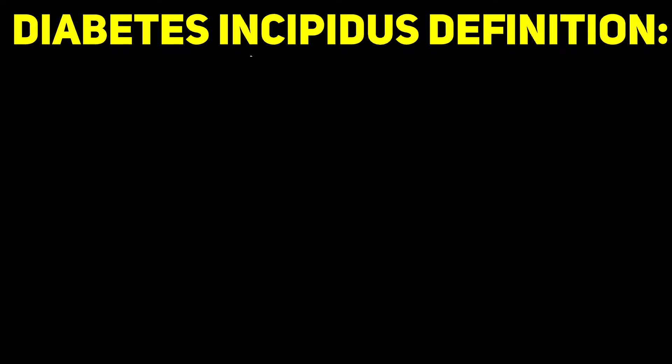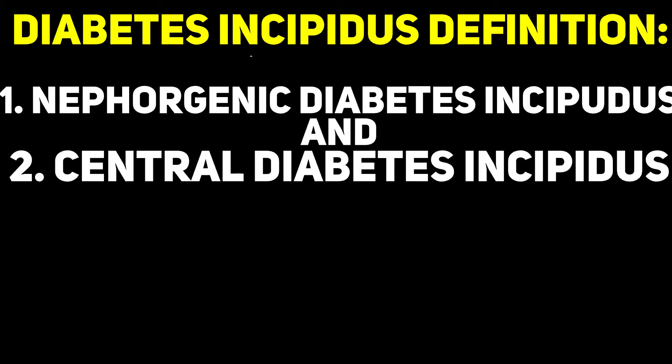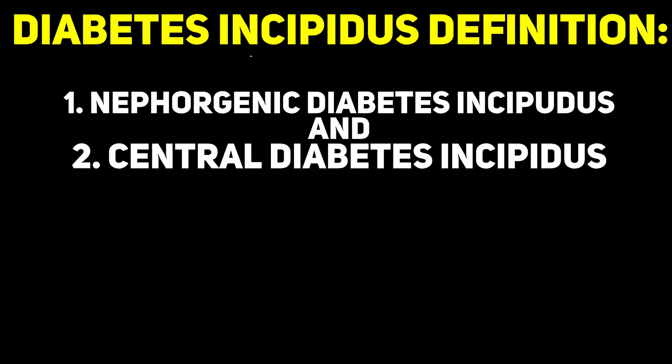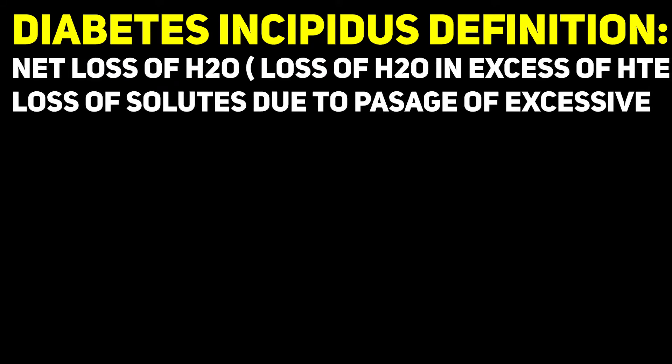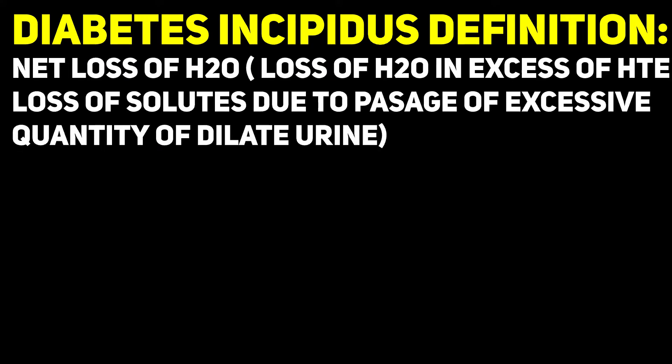In this video I'm going to be talking about diabetes insipidus. It can be broken down into two essential points: one is nephrogenic diabetes insipidus, and one involves the pituitary gland. This video will contain a definition and explanation of diabetes insipidus, and I have a memory photograph which will allow you to easily remember all the symptoms.